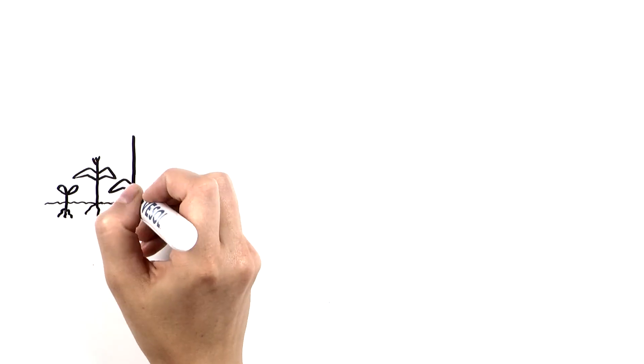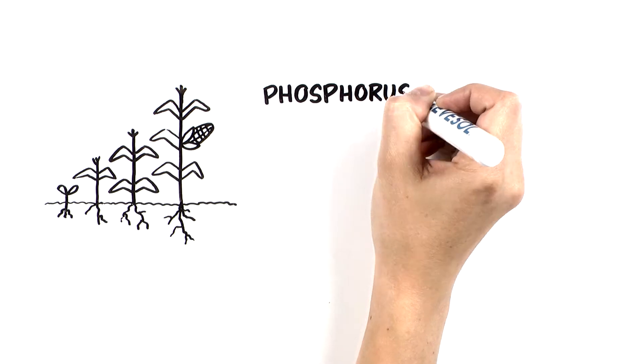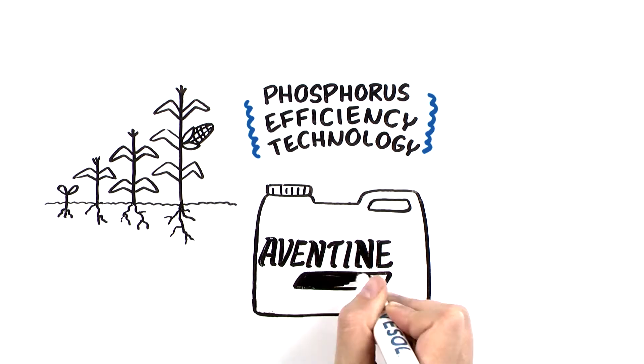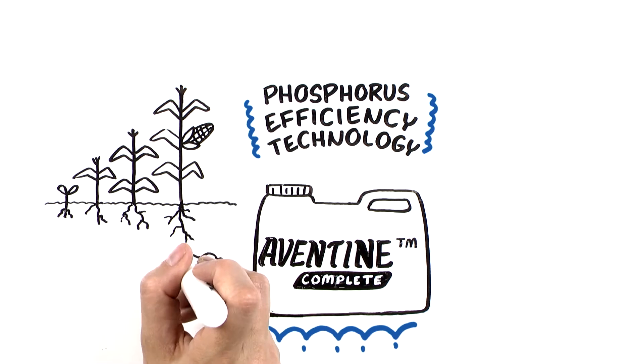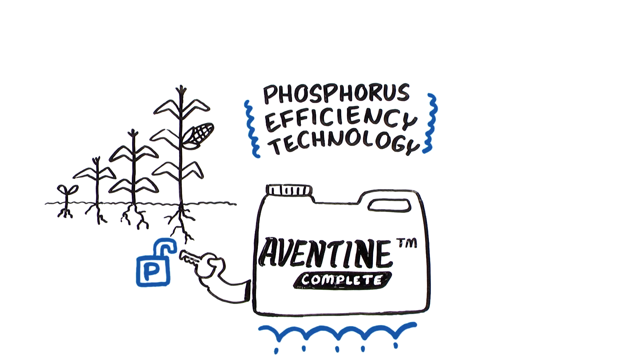Second, ensuring the starter program includes phosphorus efficiency technologies such as CHS Aventine Complete, which contains Levisol, prevents the phosphorus and micronutrients in the starter from getting tied up in the soil and ensures they are readily available to the seedling.